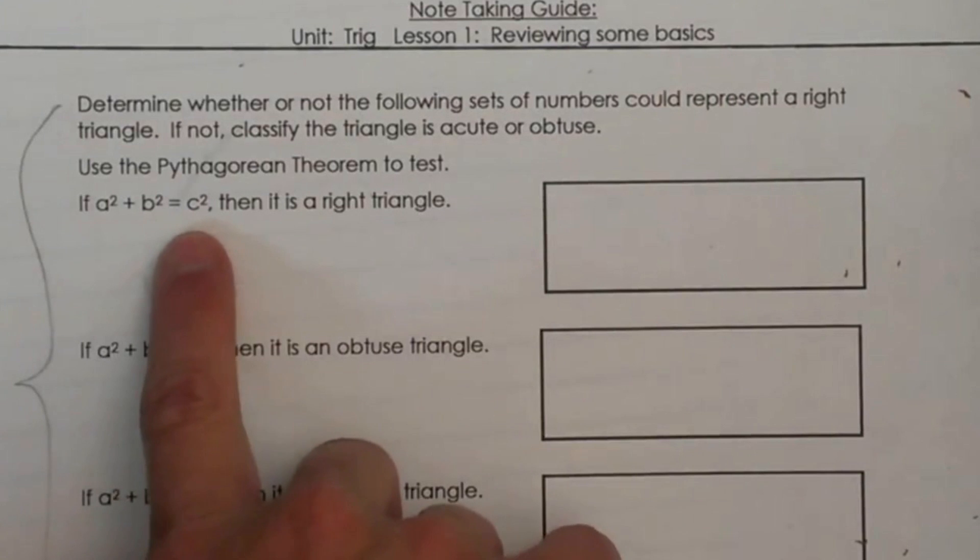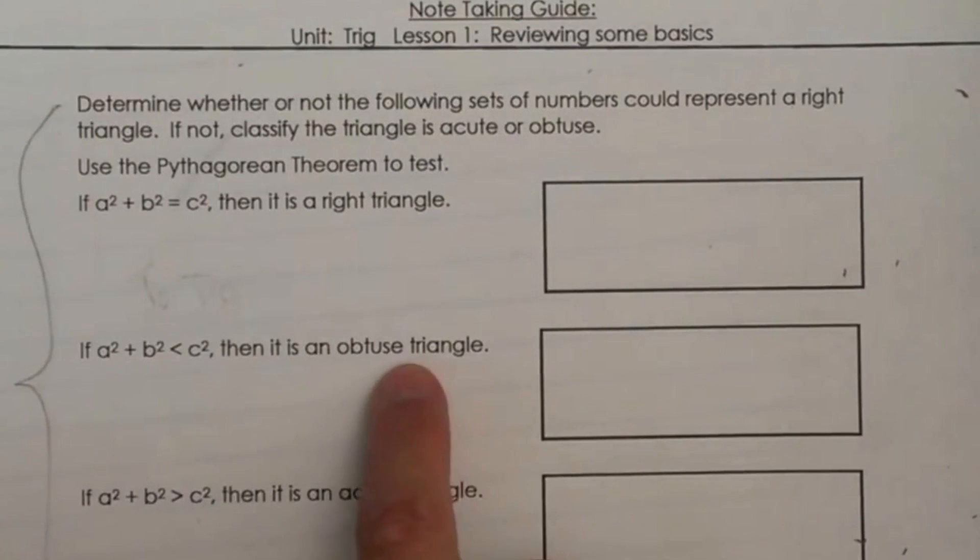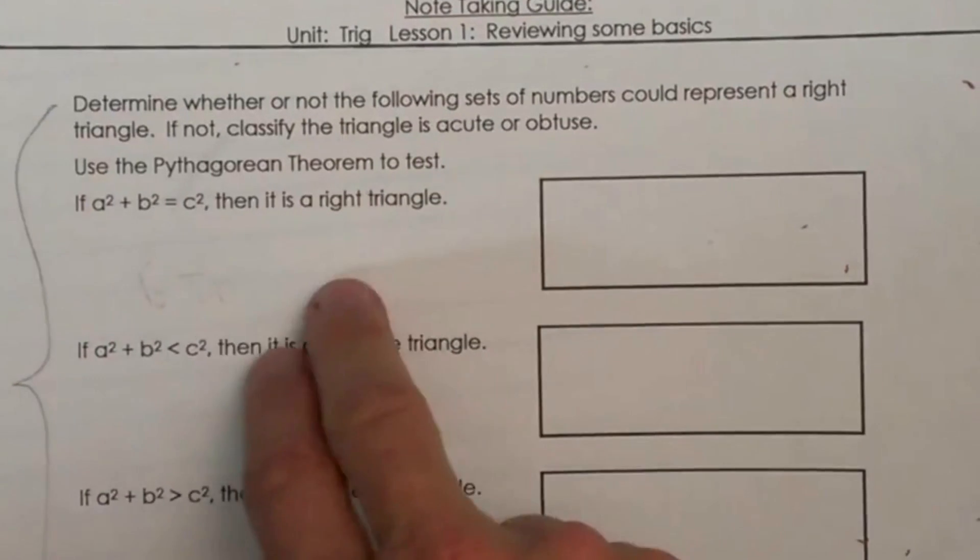Comparing A squared plus B squared equals C squared to decide if we have right triangles, or if we have obtuse triangles or if we have acute triangles. And this is a quick little test.